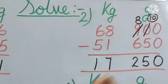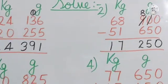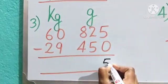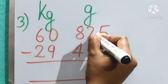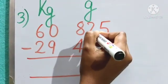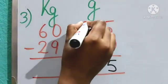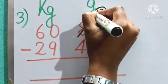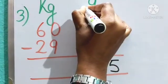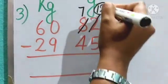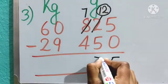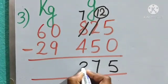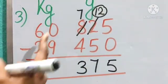Now number 3. 5 minus 0. Yes, only 5. Next, 2 minus 5, we can't do. So we will borrow 1 from 8, and this 2 became now 12. And after borrowing 1 from 8, this one became 7. So 12 minus 5. Yes, very good, 7. And 7 minus 4, 3.